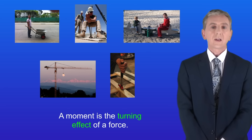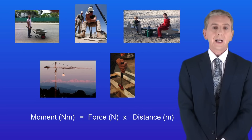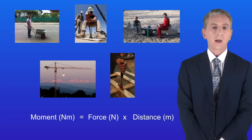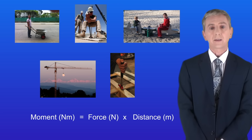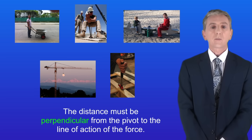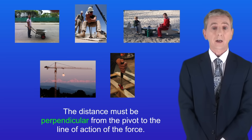We've already seen that a moment is the turning effect of a force. We calculate the moment in newton meters by multiplying the force in newtons by the distance in meters. Remember that the distance must be perpendicular from the pivot to the line of action of the force.